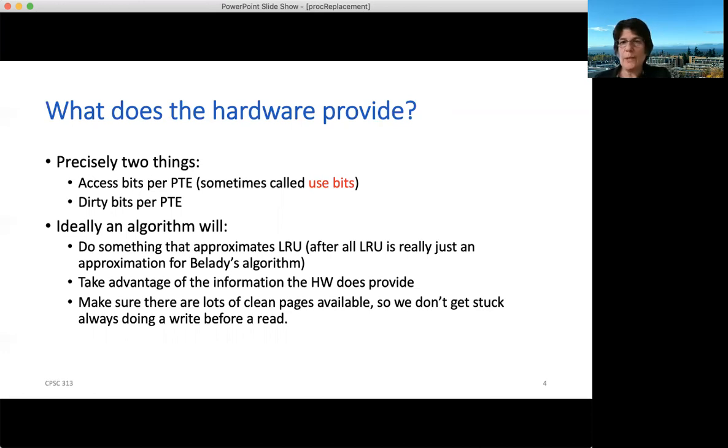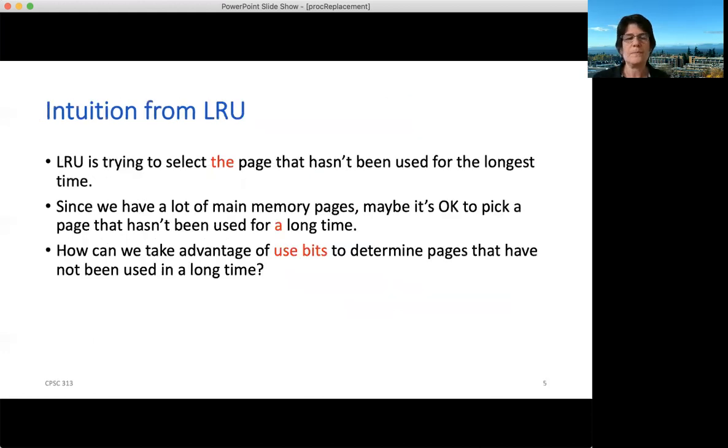And given these two bits, what we'd like to do is come up with an algorithm that will let us approximate LRU. Recall that LRU is just an approximation for Belady's. So if we could approximate LRU, that's probably pretty good. So our goal here is to figure out how to use these use bits and maybe the dirty bits to approximate LRU. Intuitively, what LRU is saying is, I want to find the page that was used furthest back in the past. It's been unused for the longest period of time, and that's the one I'm going to evict. Now, since memory is pretty big, maybe instead of finding the page that hasn't been used in the longest time, I could just find a page that hasn't been used in a long time.